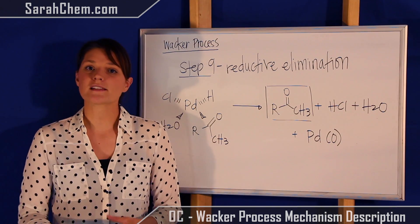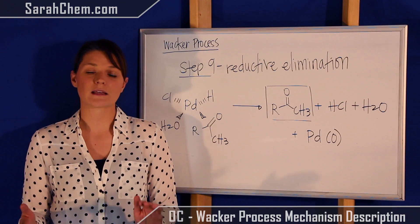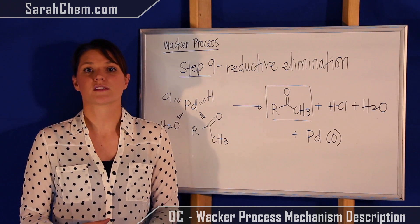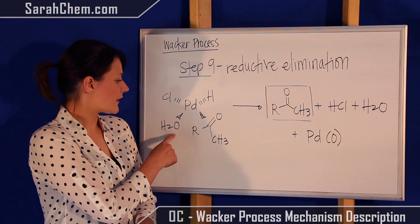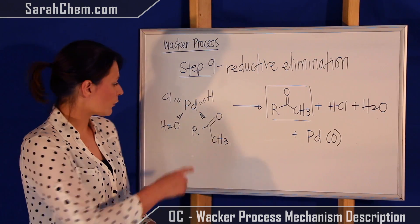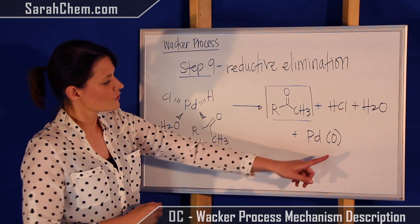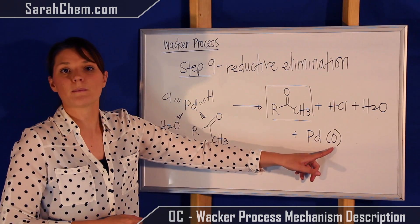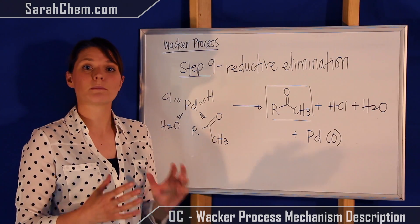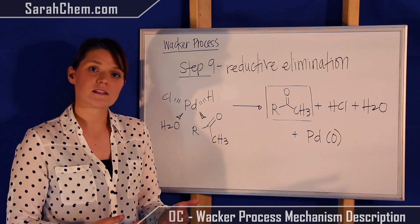Step nine is reductive elimination — we eliminate all the ligands off the palladium and reduce it to an oxidation state of zero. At this point it is at oxidation state +1, so removing all ligands gives palladium an oxidation state of zero. Steps one through nine produce our desired product, the methyl ketone; the remaining steps regenerate the +2 oxidation state on palladium.